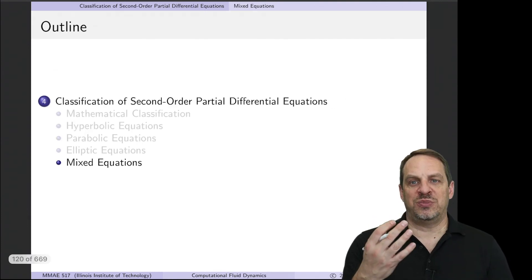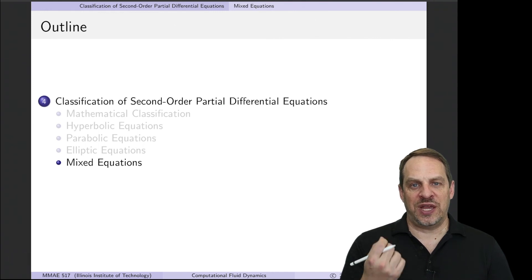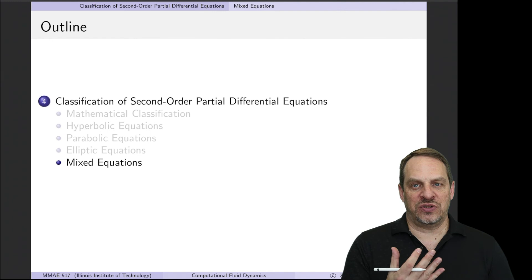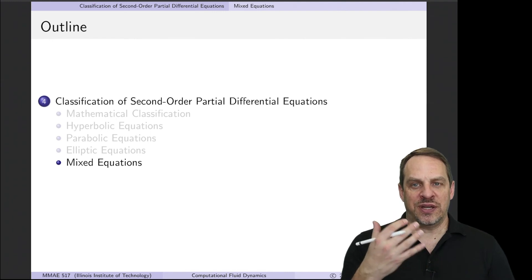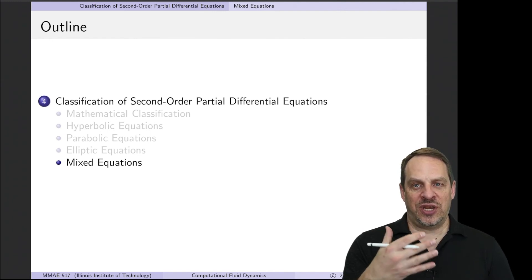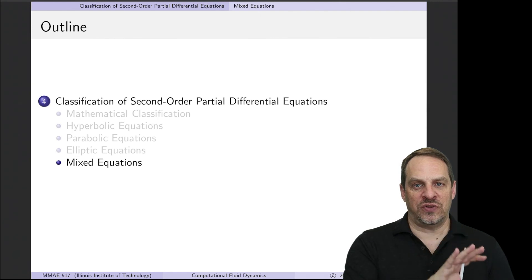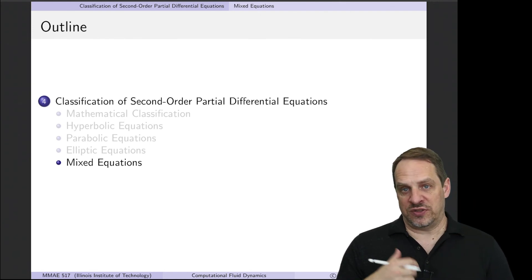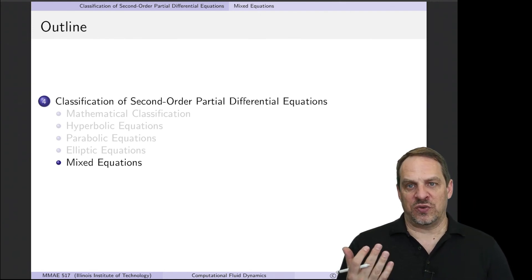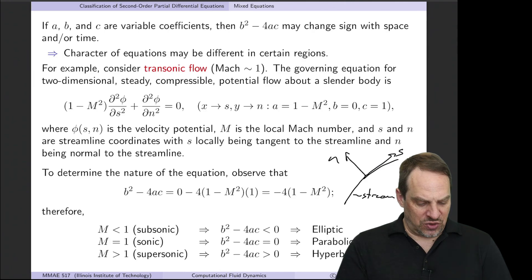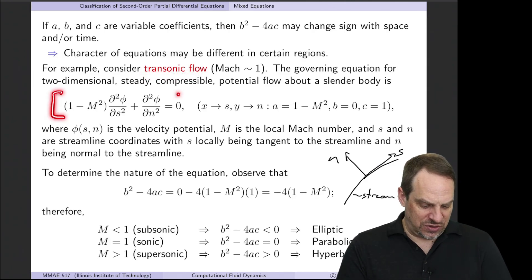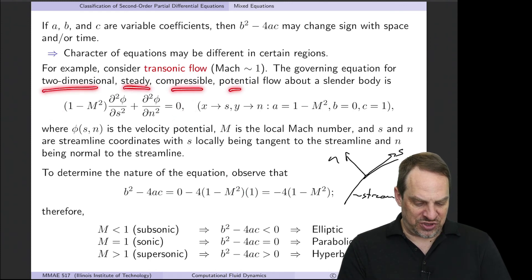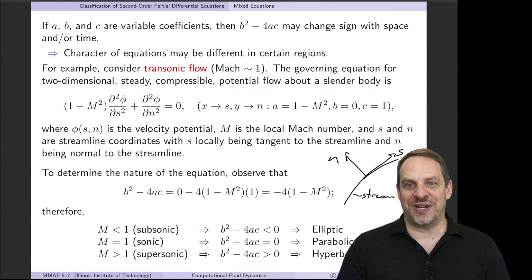There's one more possibility: if the coefficients a, b, c on the second derivative terms are functions of x and y, the character of the equation can change from one region to another because b²−4ac may change sign. An example is transonic flow, where we have an equation governing 2D steady compressible potential flow about a slender body.